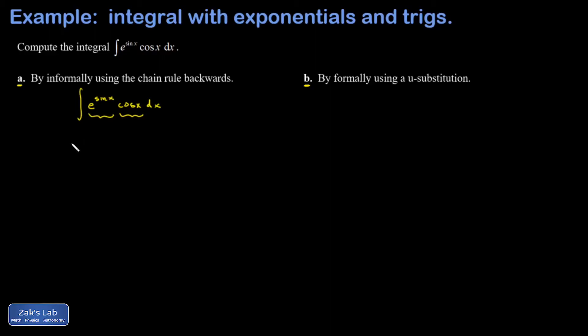This exponential happens to be the special function that's equal to its own derivative. So I'm asking, where did this integrand come from? What do I differentiate to get this integrand? And it's just e to the sine x.